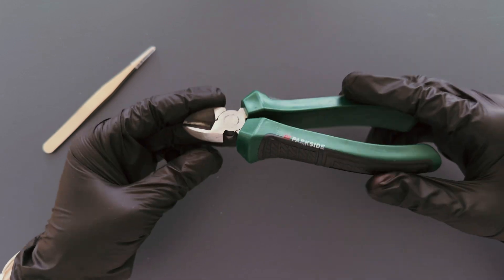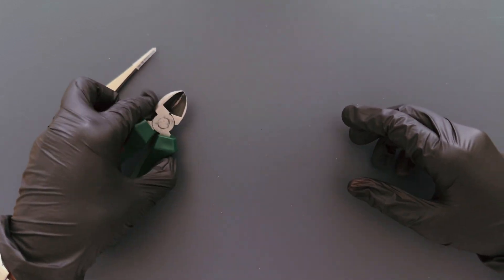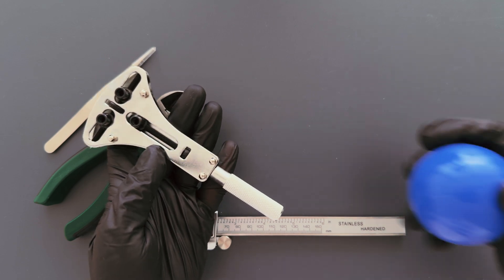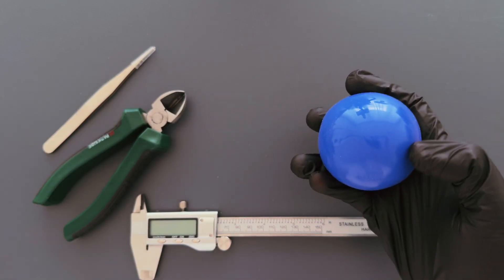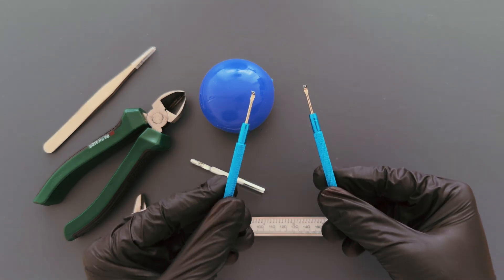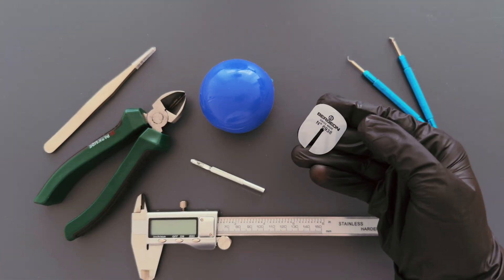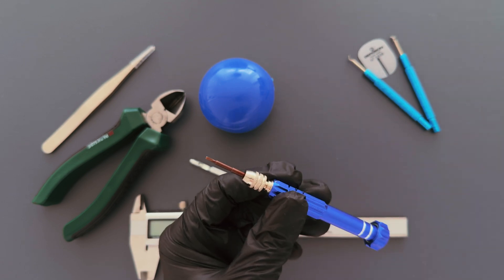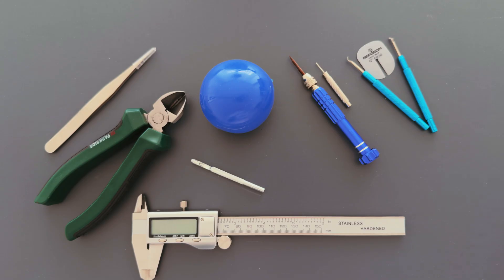Tweezers. Flush cutters for trimming the stem. Caliper or ruler. Case back opener. But honestly, a rubber ball works better. Hand press tool. Hand remover. Plus dial protector. Screwdriver or pin to release the stem. Dust blower.